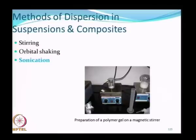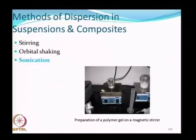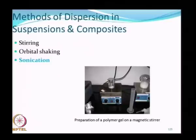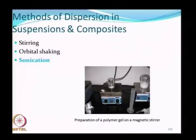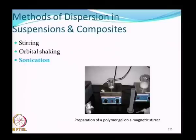Some methods of dispersion of nanoparticles in suspensions and composites include stirring, orbital shaking, and sonication. In the stirring process, you use a magnetic or electrical stirrer to keep the suspension well stirred so particles are uniformly distributed and dispersed. An orbital shaker provides a centrifugal force to prevent particles from becoming dispersed. Sonication, in addition to providing high cavitation intensity for fragmenting particles, also keeps particles well dispersed in solution through the associated acoustic fields.